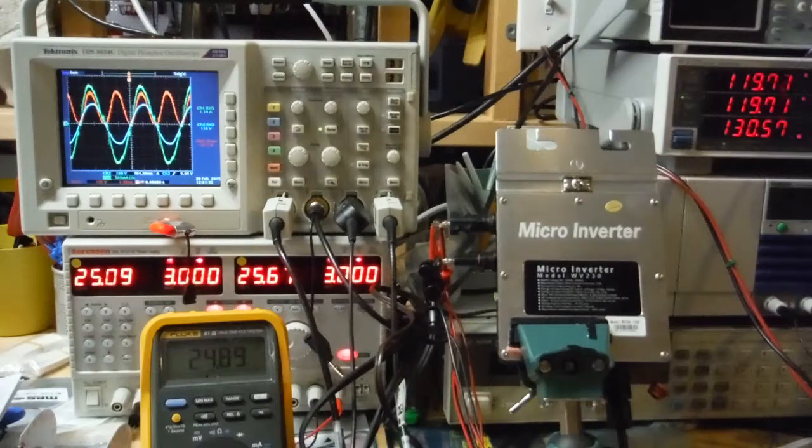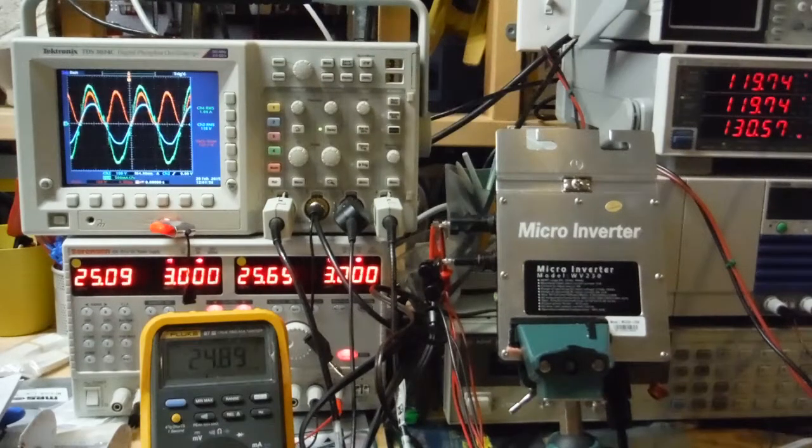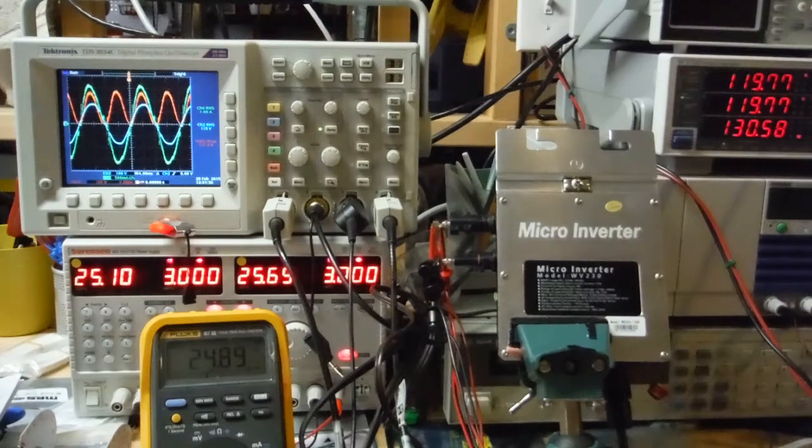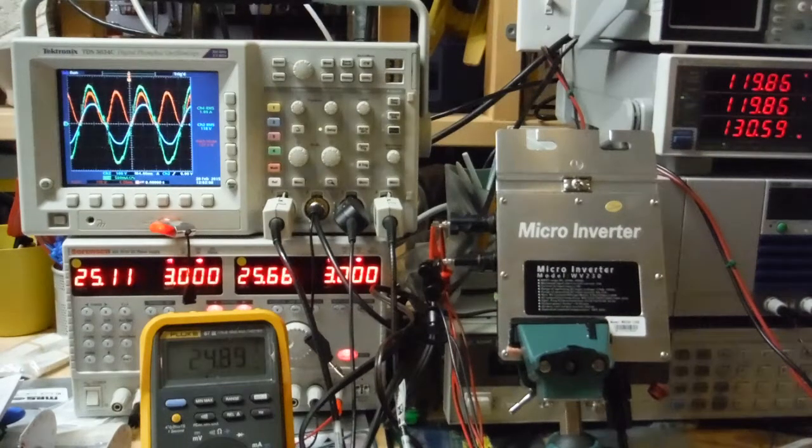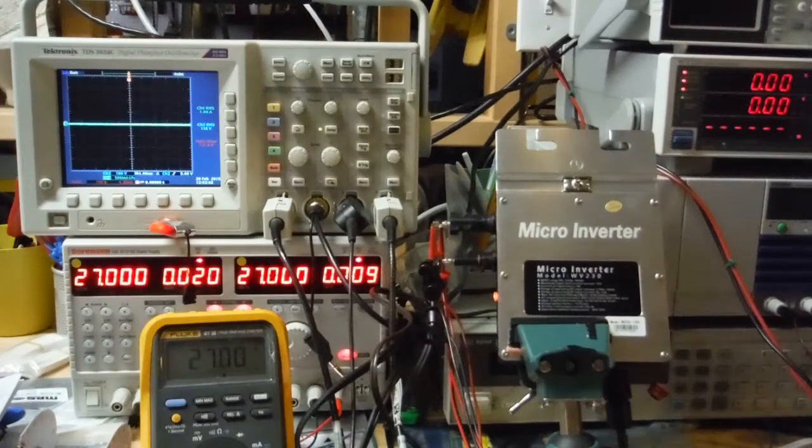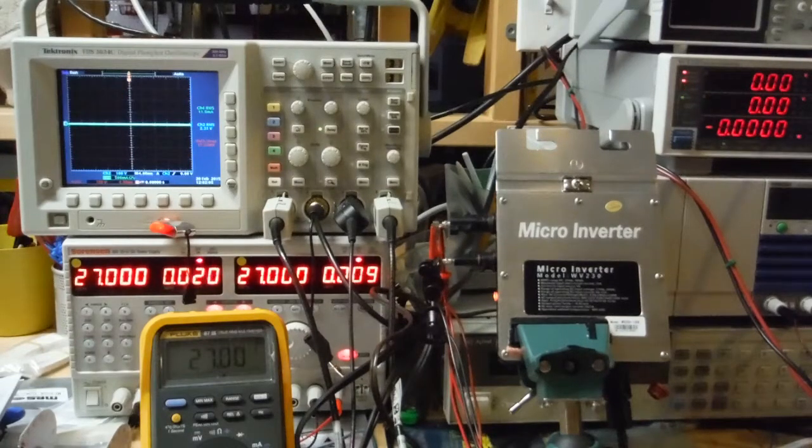So right now, there's 120 volts at the output of this guy. If I unplug it from the grid, even though I still have input voltage, it should shut that down. And it does. So the islanding protection works.